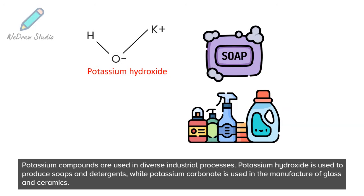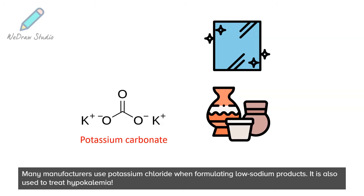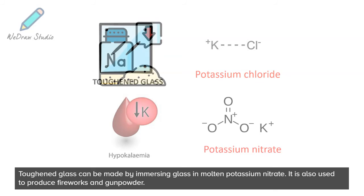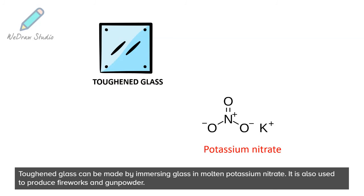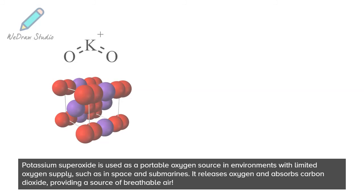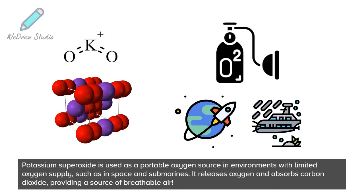Potassium compounds are used in diverse industrial processes. Potassium hydroxide is used to produce soaps and detergents, while potassium carbonate is used in the manufacture of glass and ceramics. Many manufacturers use potassium chloride when formulating low-sodium products, and it is also used to treat hypokalemia. Toughened glass can be made by immersing glass in molten potassium nitrate, which is also used to produce fireworks and gunpowder.